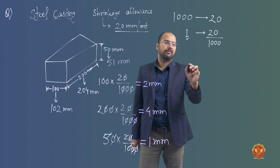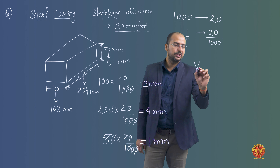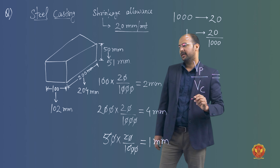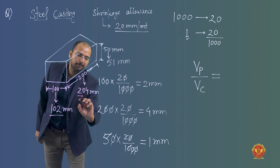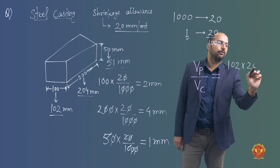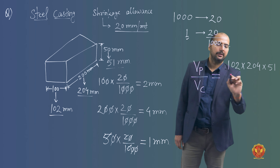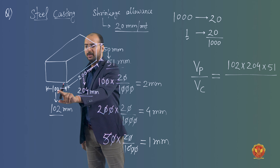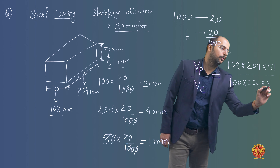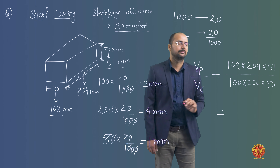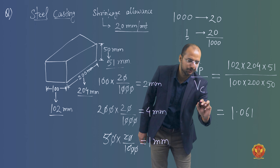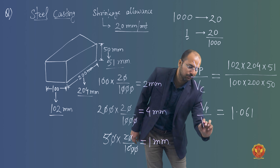Now we need to finally find out the ratio of the volume of the pattern to the volume of the casting, where P stands for pattern and C stands for casting. Pattern volume = 102 × 204 × 51. Casting volume = 100 × 200 × 50. After calculation, the ratio comes out to be 1.061. This is our ratio of volume of pattern to volume of casting.